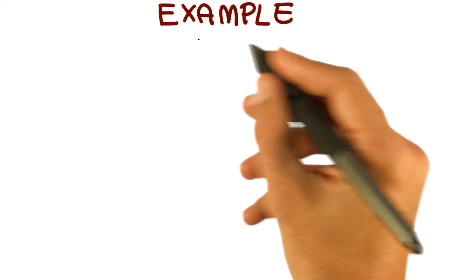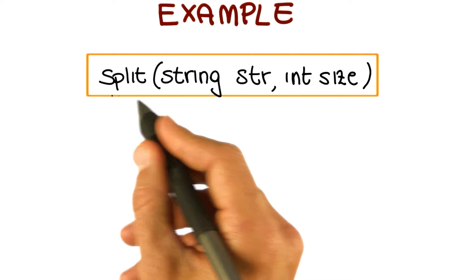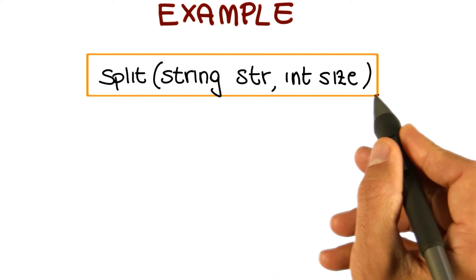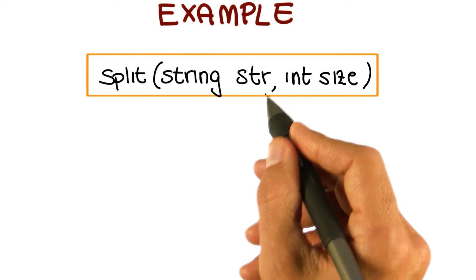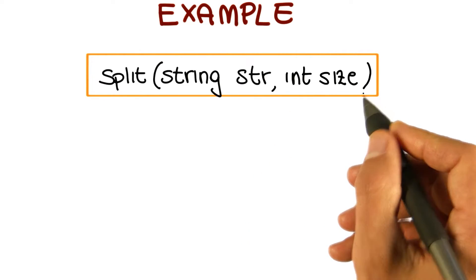So let's look at how this will work with an example. I'm going to use this simple program that takes two inputs. The first input is a string, str, and the second one is an integer, size. And the program is called split.